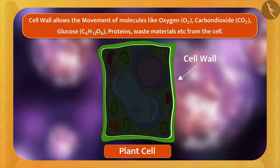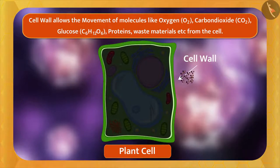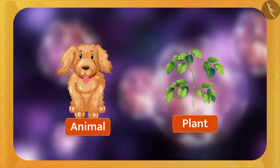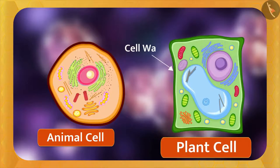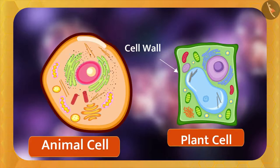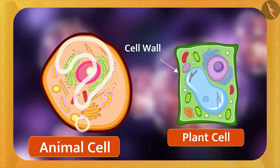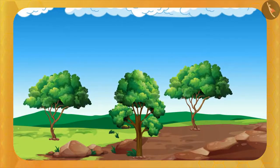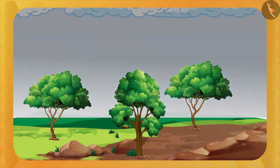The cell wall is a permeable membrane and a vital part of the cell — this layer allows small particles to go in or out, and no organic chemical reaction takes place in it. Can you tell why cell walls are only in plant cells and not in animal cells?